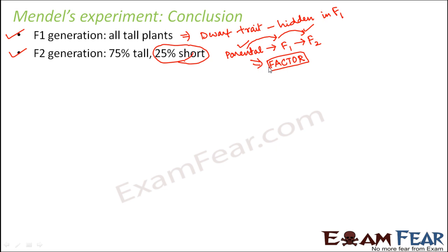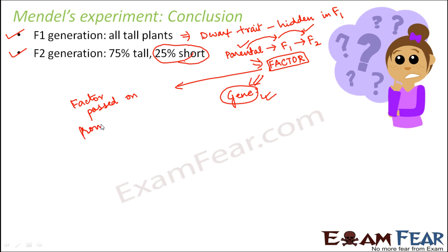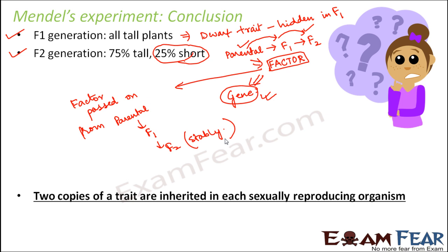This factor is what we call genes today. Mendel did not coin the term gene — that came up quite later; he used to call them factors or inheritance factors. Mendel said that the factor was being passed on from the parental generation to F1 to F2 in a very stable way, without much change. The overall conclusion he gave was that two copies of a trait are inherited in each sexually reproducing organism.